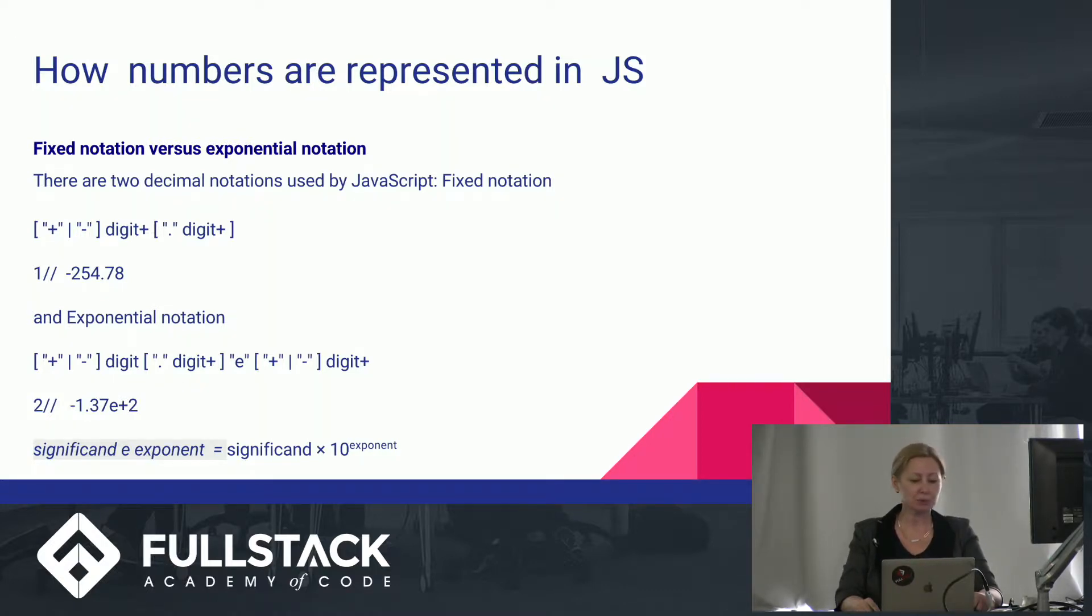So for output, it's always exactly one digit before decimal point. And for input, you can use more than one digit. So exponential notation is interpreted as follows: Given a number in exponential notation represented as significand e exponent, the value of that number would be significand times 10 to the exponent's power. So minus 1.37e plus 2 would represent number minus 137.